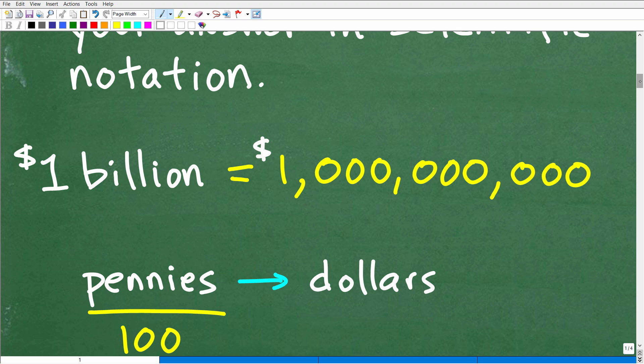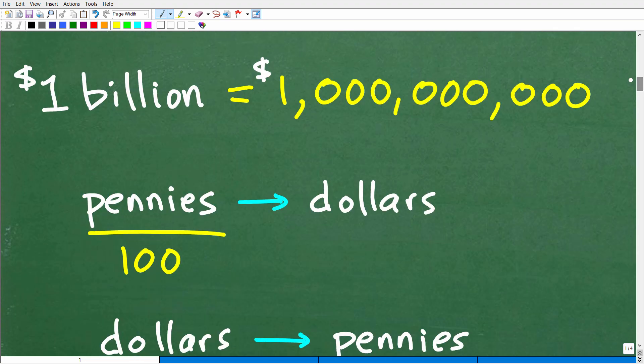So what's the next step? We want to know how many pennies are in a billion dollars. We're talking about dollars, so we need to know how many pennies are in a dollar. This is stuff that you should already know. Hopefully you understand that there are 100 pennies in $1.